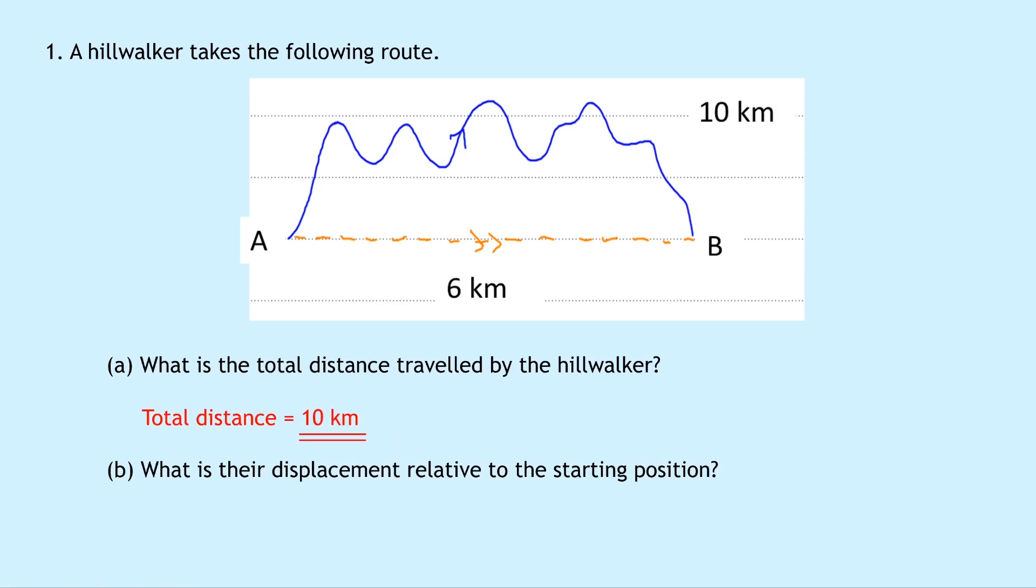Part B says what is their displacement relative to the starting position? Well A is the starting position, they're starting off at A and they're ending up at B. Well remember the displacement is going to be the shortest distance from the start to the finish point drawn with a straight line. So the shortest distance from A to B is going to be six kilometres in this example and we're given that in the question.